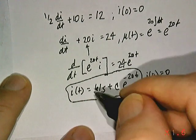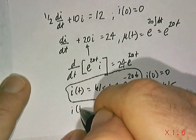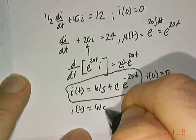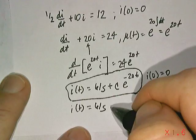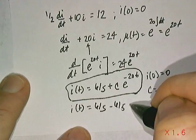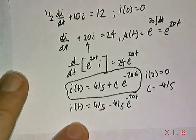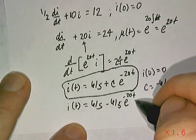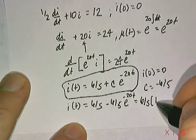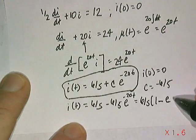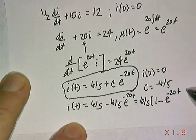So ultimately, what the response function for your current looks like is 6/5 minus 6/5 times e to the minus 20T power. You could rewrite that as 6/5 times the quantity (1 minus e to the minus 20T power).